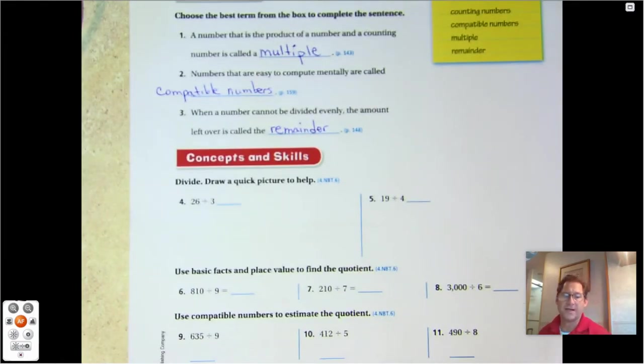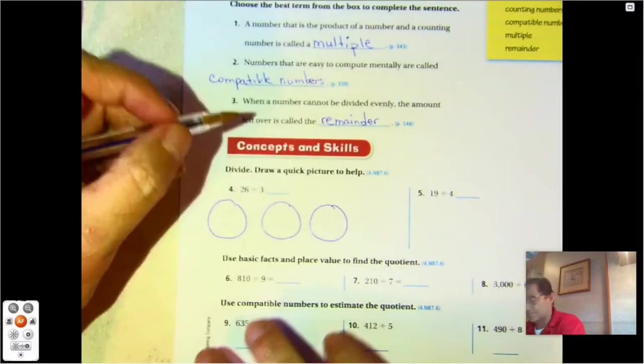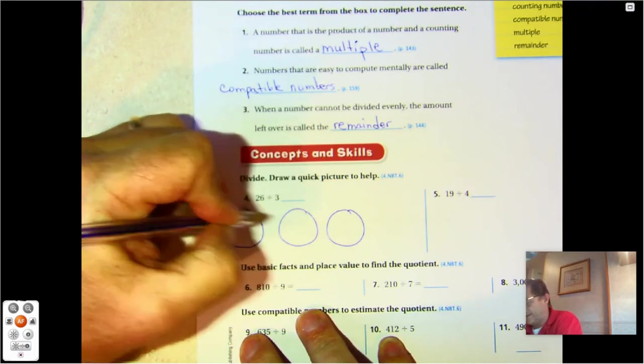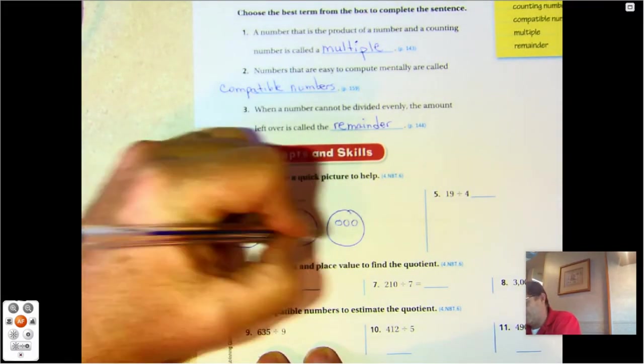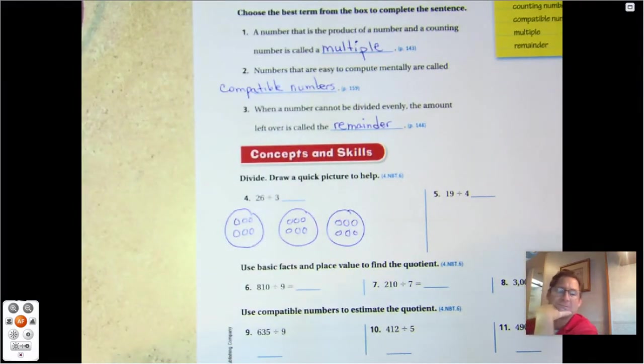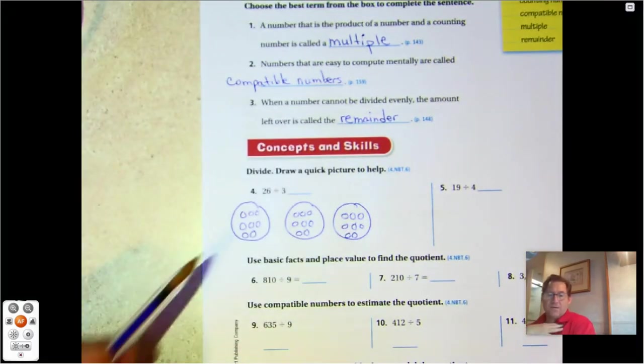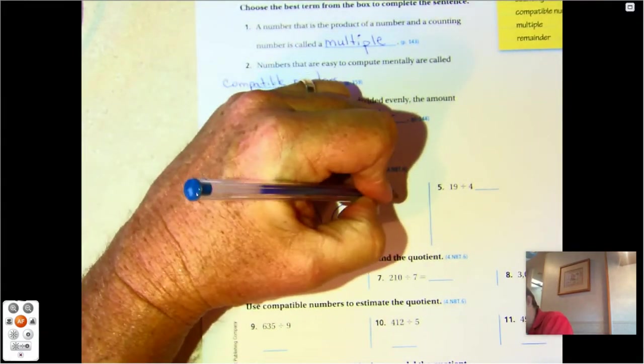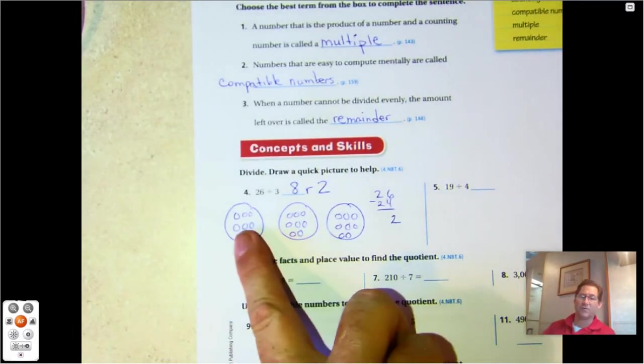On four and five, we're going to draw a quick picture to help. So 26 divided by three. I'm just going to share groups of threes: three, six, nine. I can share some more: nine, twelve, fifteen, eighteen. 18 plus nine is 27, so I can't put groups of three again. Let's try two: two, four, six. So now we have eight, sixteen, twenty-four. So eight into each group. 26 take away 24 is two. I can't share those two evenly into three groups. So eight remainder two.